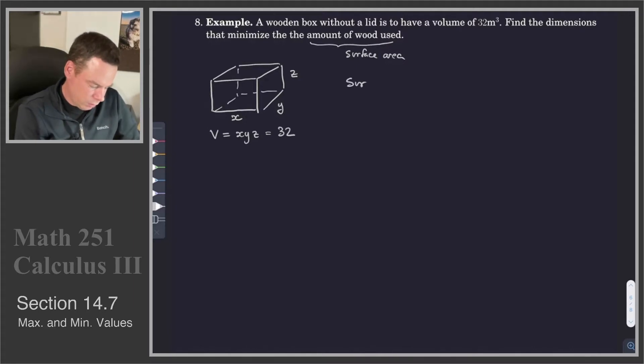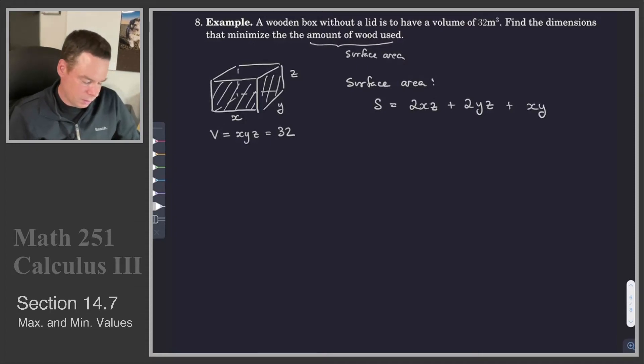We're interested in the surface area. So the surface area for such a box is, well there's a front panel that has dimensions x times z, and there's two of those because there's also a back panel. There's a right panel which has area y times z, and there's two of those. There's a left panel as well, and then there's a bottom panel which has area x times y, but there's only one of those because it doesn't have a lid.